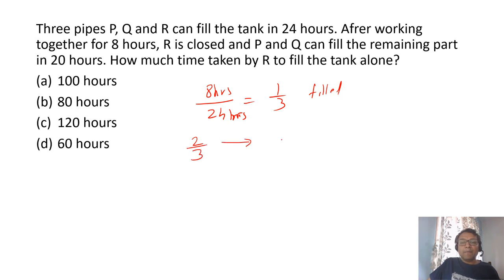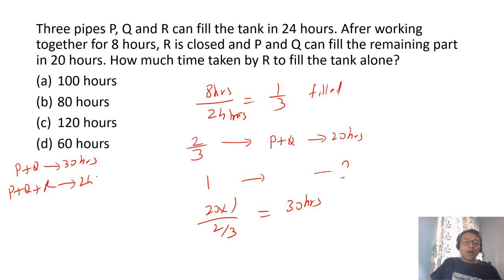Two third of a tank is filled by P and Q in 20 hours. So to fill complete tank, how long will it take? If you cross multiply 20 into 1 upon 2 upon 3, you should get 30 hours. Which means we know that P plus Q takes 30 hours. And all three, P plus Q plus R takes 24 hours. Now we want R, how long does it take to fill? You can do by different methods. The LCM method, a normal method.